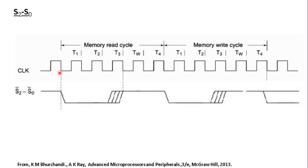Now we will consider the status bits S0 to S2. These appear only in maximum mode and provide bits to control the bus controller to generate the various bus signals. These bits should be active starting from the address cycle at T1, and should remain active at least through the end of T3, so the bus controller can generate the signals required for data transfer.